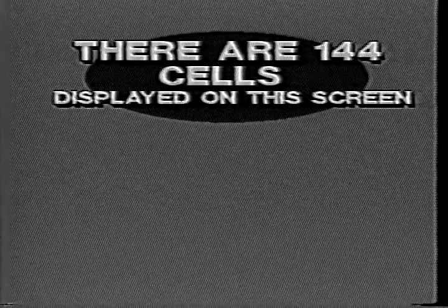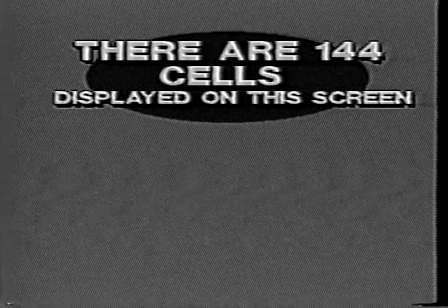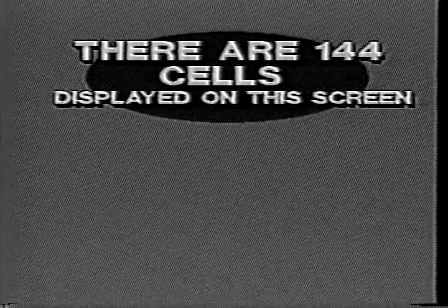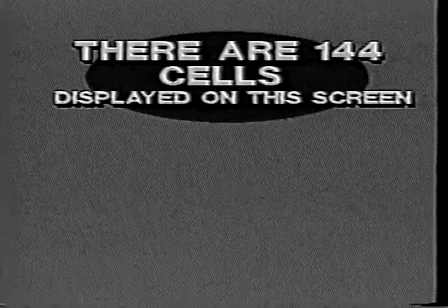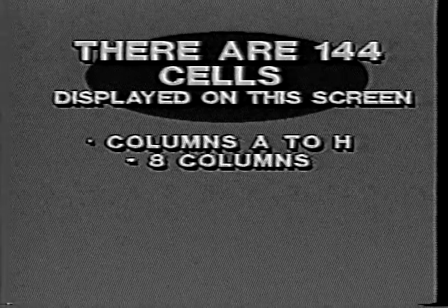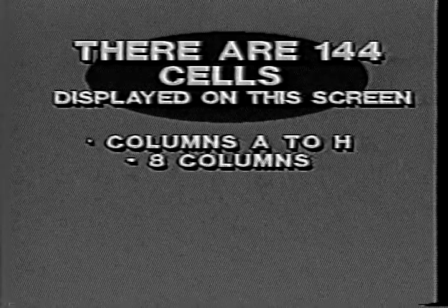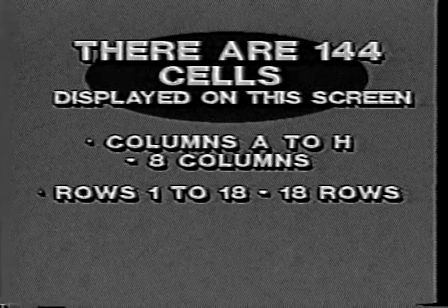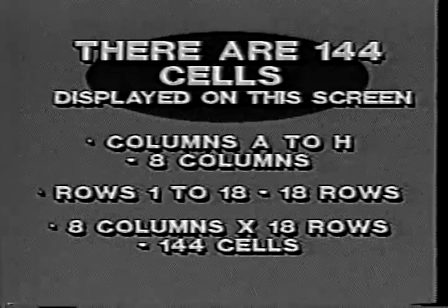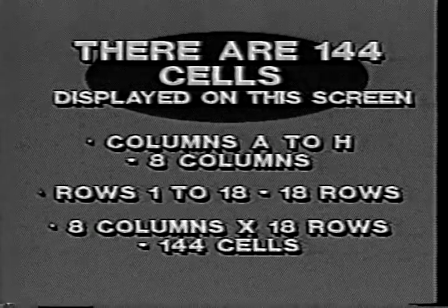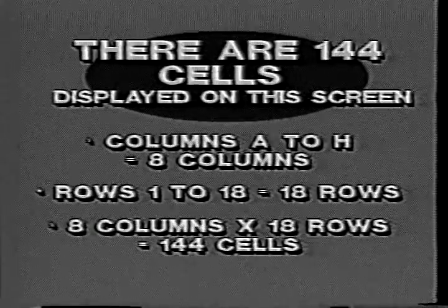By moving the cell locator, you can begin to see that the spreadsheet is actually made up of hundreds of cells. In fact, the current spreadsheet displays 144 cells — that's because there are eight columns and 18 rows visible, and eight times 18 equals 144 cells.